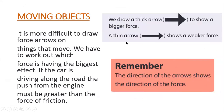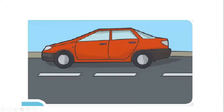We use arrows to show forces. We draw a thick arrow to show a bigger force and a thin arrow to show a smaller force. Look here - this is a car with two different forces. One has a thick arrow, one has a thin arrow. The thick one shows greater force. If this force is greater than the other, the car can move easily.